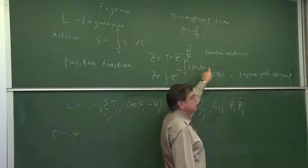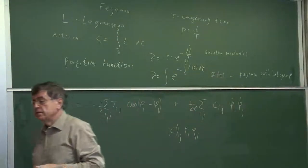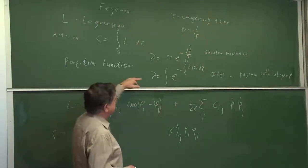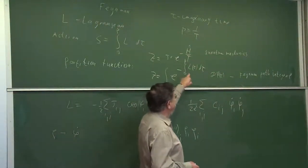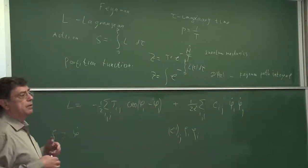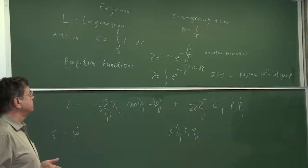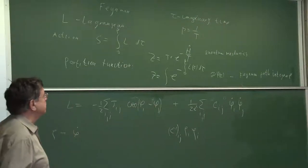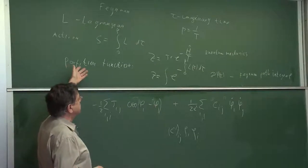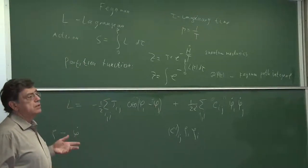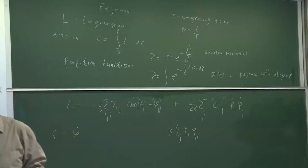Therefore one can already understand very well the statement that quantum effects add an additional dimension. Talking about quantum criticality in two dimensions would mean that it is effectively a three-dimensional system. This is the conventional understanding: the imaginary time direction acts as an additional spatial dimension, mapping the quantum critical problem onto a classical one in one higher dimension.